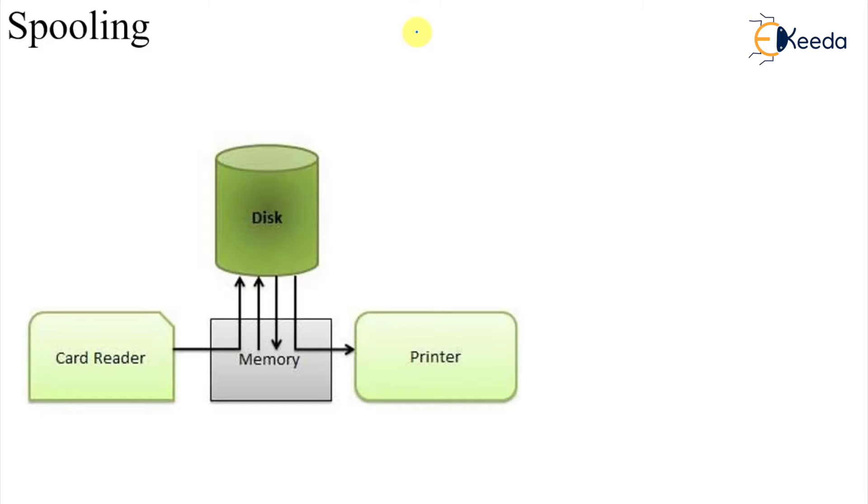The next property that we are learning here is spooling. Spooling stands for Simultaneous Peripheral Operation Online.